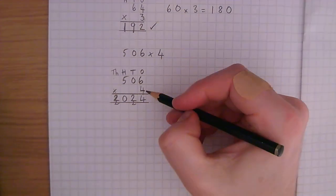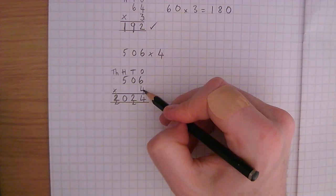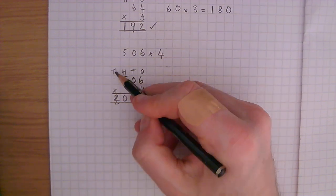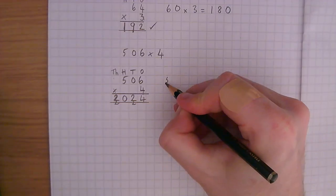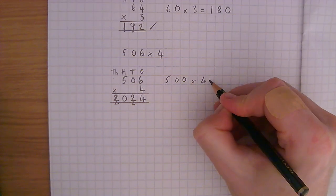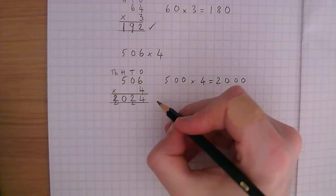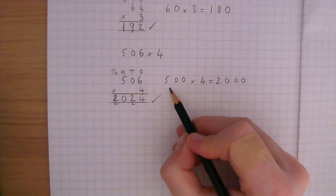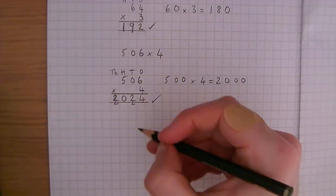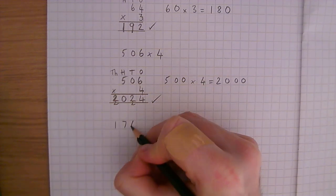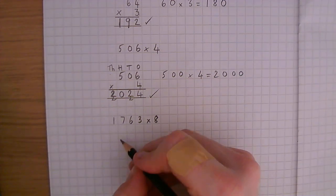Quick check. 4 times 6 is 24. 4 times 0 is 0. Add the 2. 4 times 5 is 20. Nothing to multiply 4 by, so the 2 goes there. We know that 500 times 4 is 2,000. So this answer looks correct because 506 rounded to the nearest hundred is 500. Let's have another one. We're going to do exactly the same method.